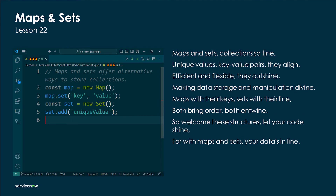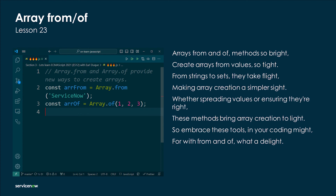Maps and Sets — collections so fine: unique values, key-value pairs they align. Efficient and flexible they outshine, making data storage and manipulation divine. Maps with their keys, Sets with their order — both bring order, both entwine. So welcome these structures, let your code shine, for with Maps and Sets your data's in line.